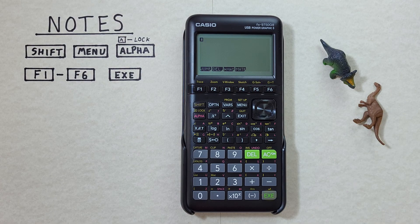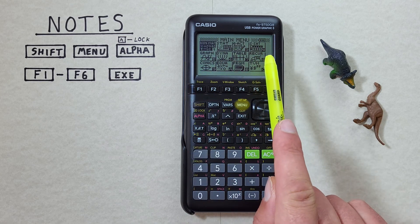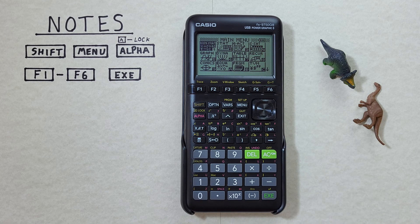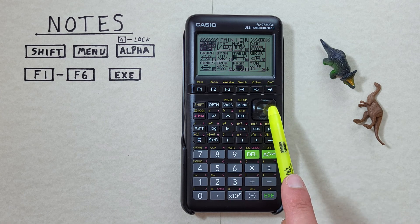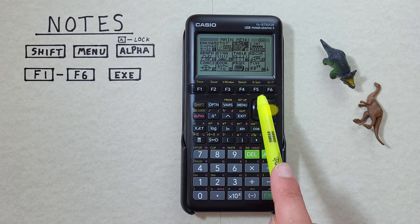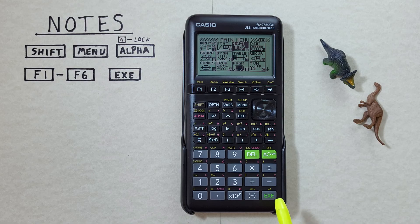To start taking notes first we have to navigate to the main menu. To do that we press the menu key so that we're seeing this screen here. Now we want to go to the EACT option that's right here so we scroll to the right screen twice and highlight that and press EXE.